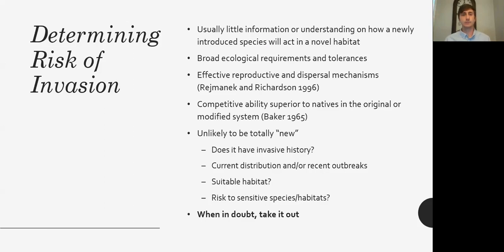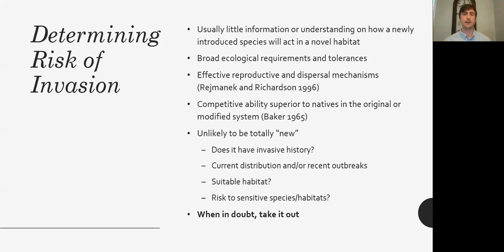How does it reproduce? Is it a precocious flowerer that produces hundreds of seeds, and how long does it take to mature? We also have to consider its dispersal mechanism — is it dispersed by mammals, birds, or wind? A great example is Chinese privet: it blooms vigorously, produces lots of seeds, birds eat it up like candy and can fly it four miles — a poster child for a clearly high-risk invasive species.